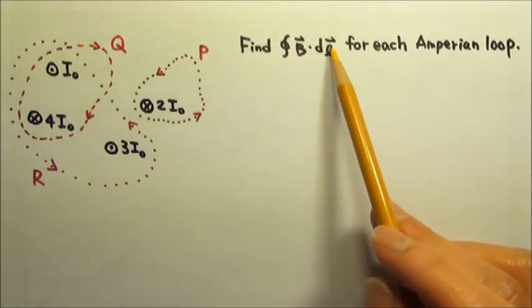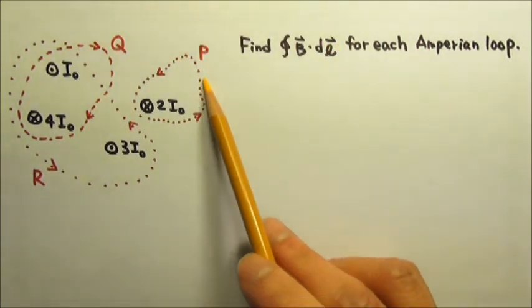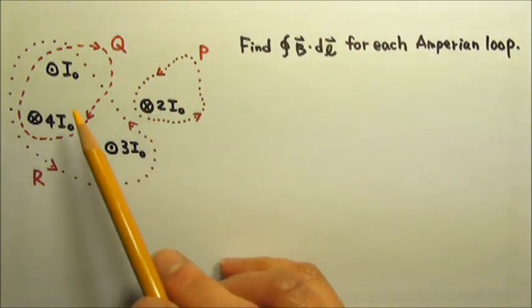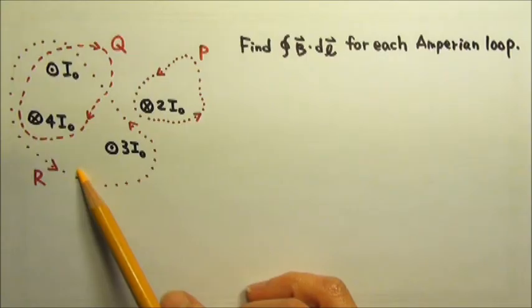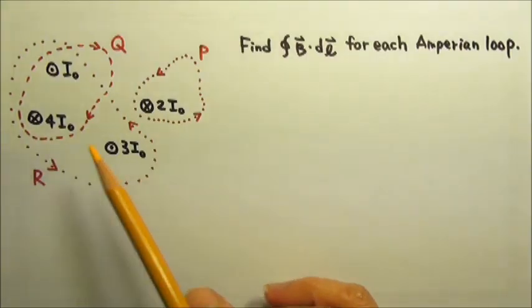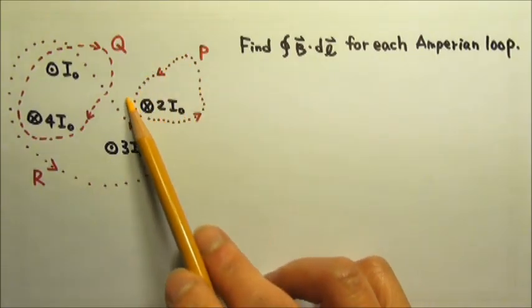Amperian loops involve direction. For these three loops, we have P going counterclockwise, Q clockwise, and R counterclockwise. Because Amperian loops have direction, some people also call them Amperian paths.